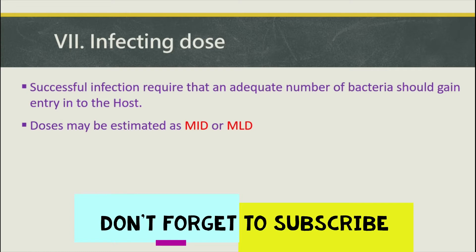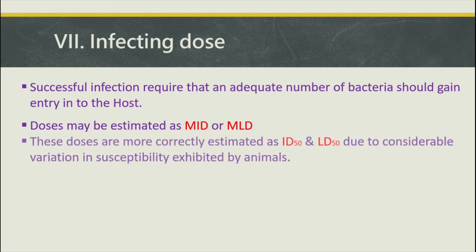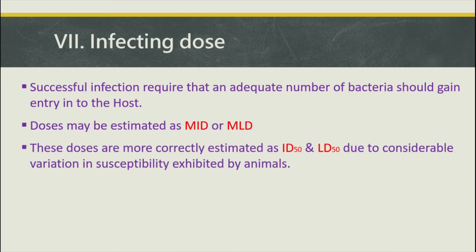Doses may be estimated as MID (minimum infecting dose) or MLD (minimum lethal dose). These doses are more correctly estimated as ID50 and LD50, due to considerable variation in susceptibility exhibited by animals. ID50 is the minimum number of bacteria required to establish infection in 50% of subjects, and LD50 is the minimum number required to kill 50% of the experimental animals.